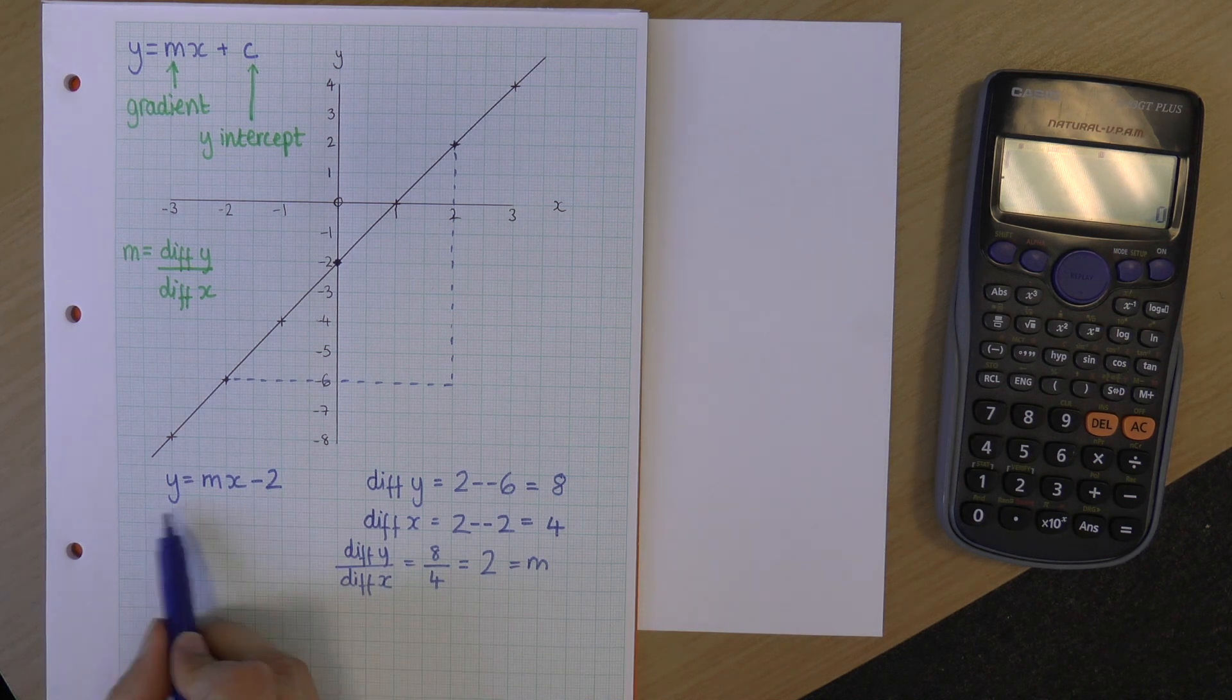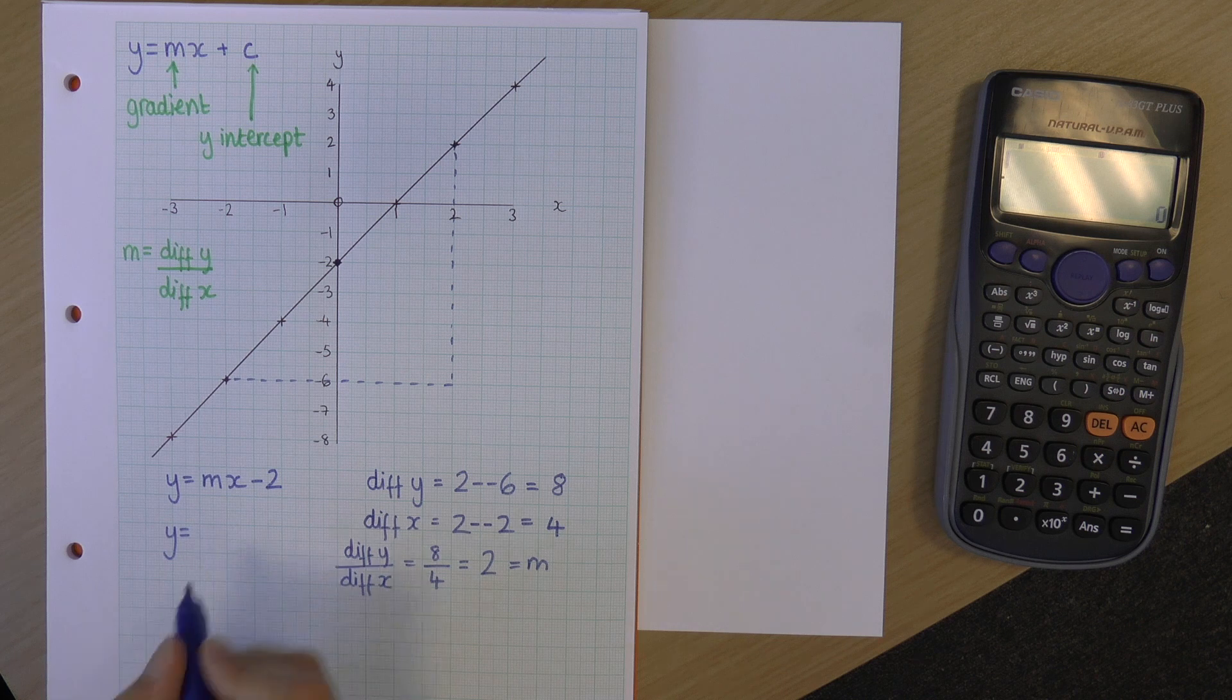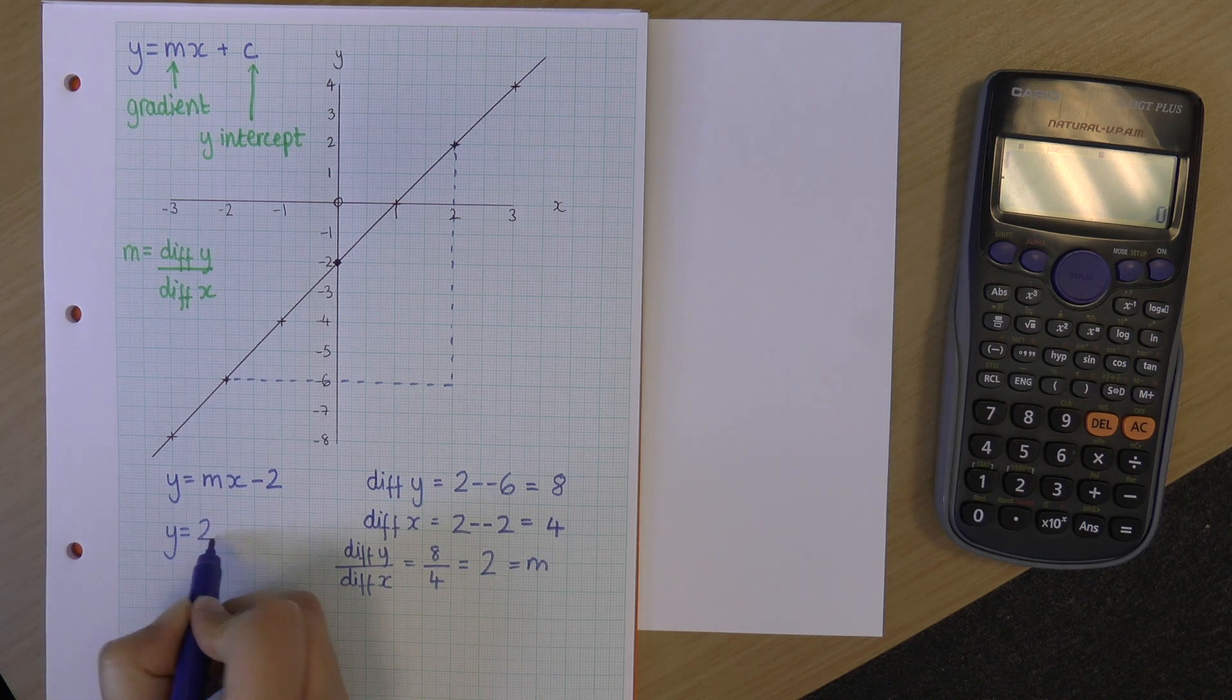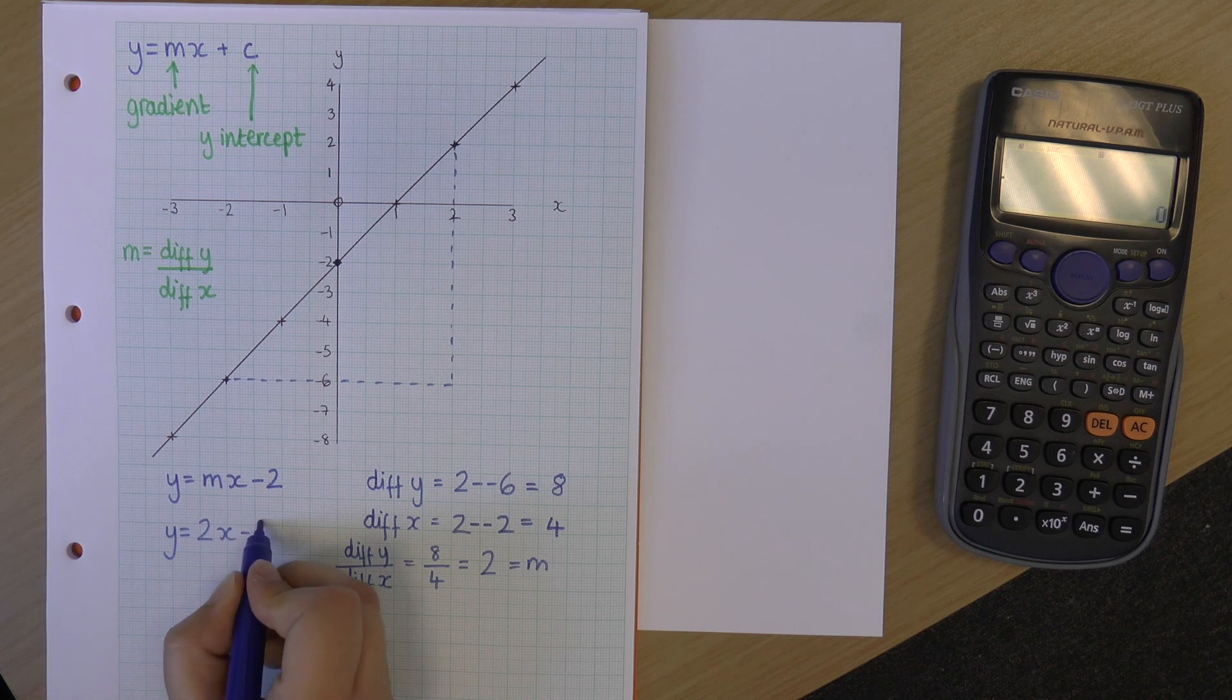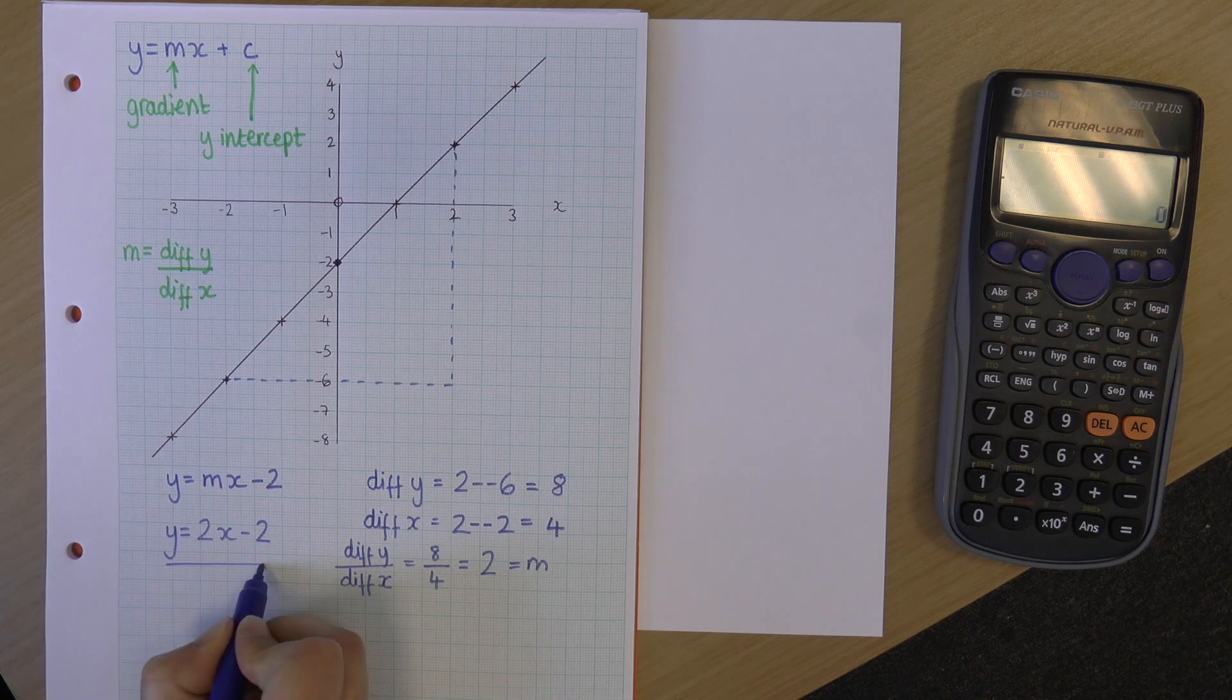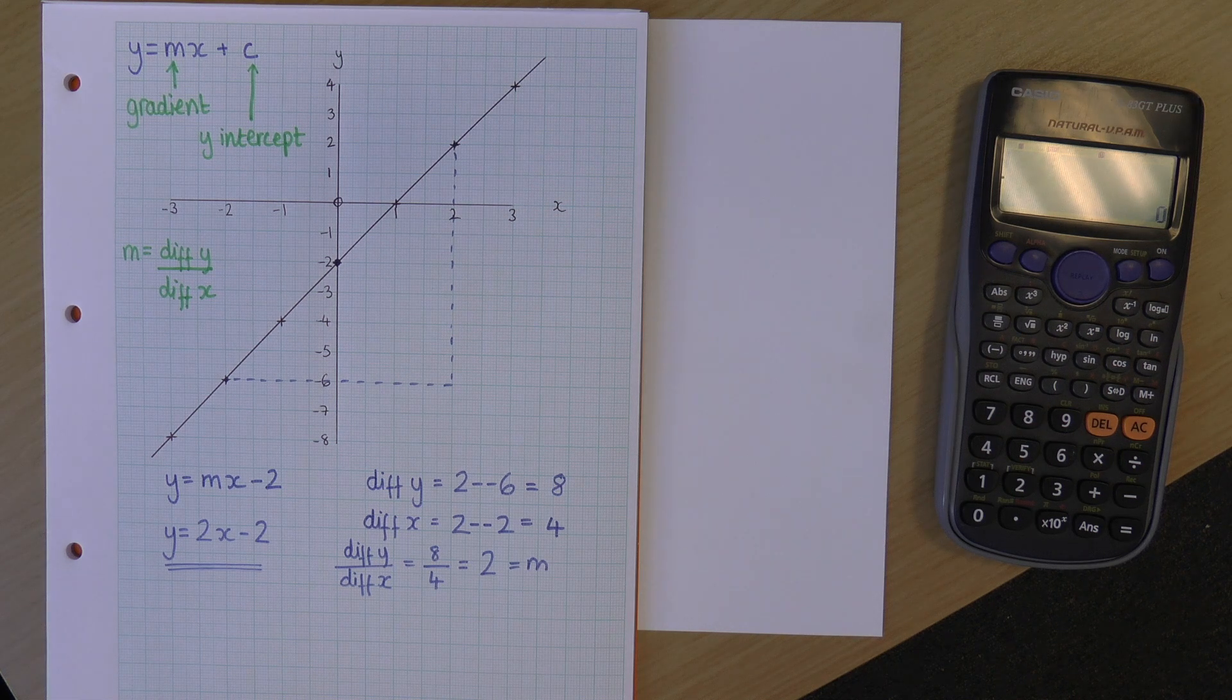So, now I can rewrite this equation with the m in place as well. So, it's 2 is the m. So, 2x minus 2. And that is the equation of this straight line graph.